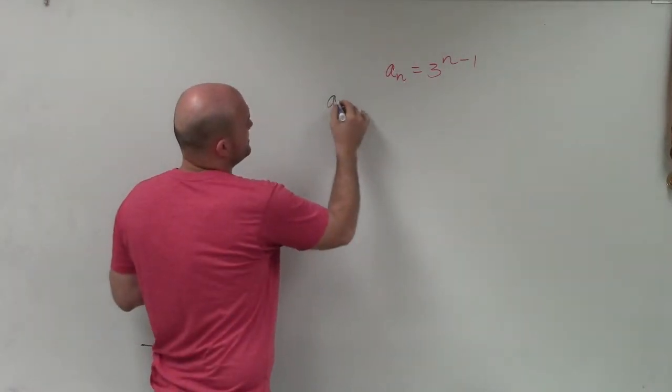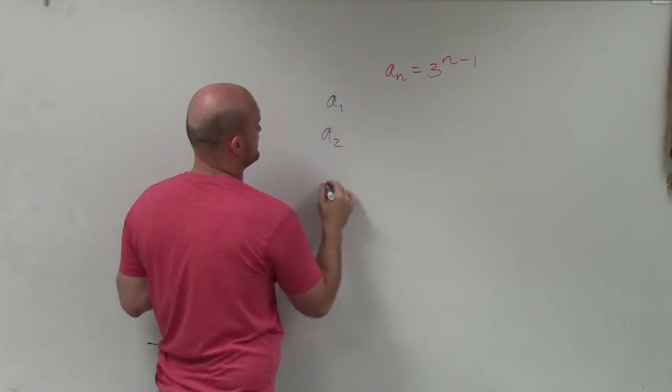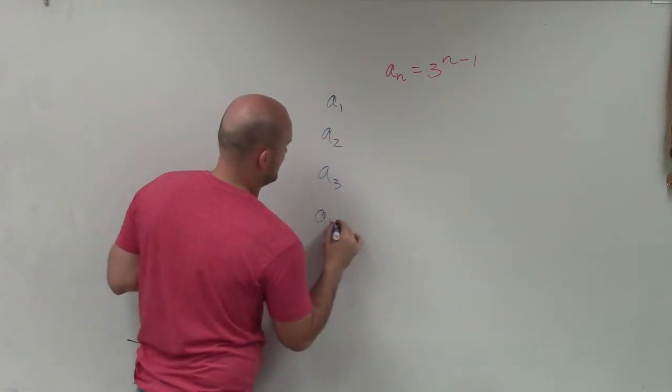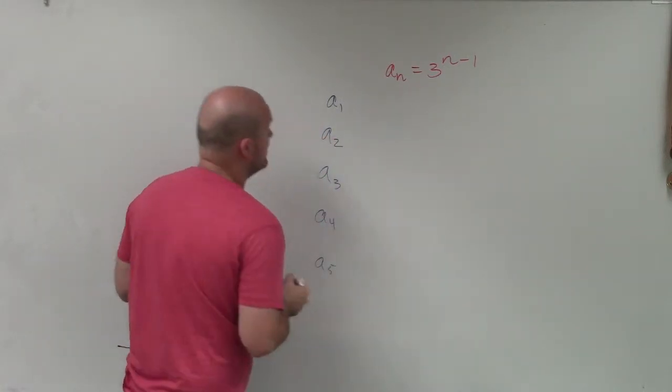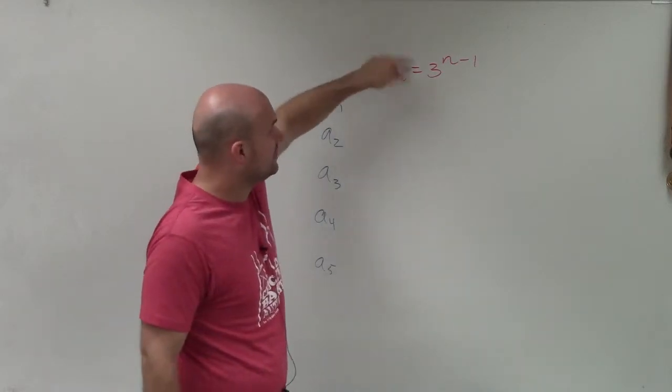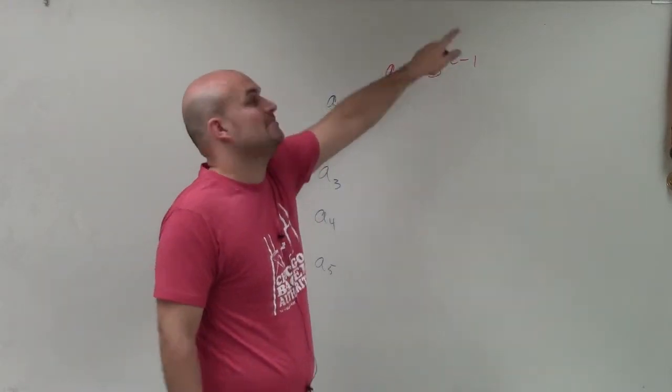So to evaluate, what they're asking is to evaluate for a sub 1, a sub 2, a sub 3, a sub 4, and a sub 5. You can see that the rule for any number is simply going to be 3 to the n minus 1.